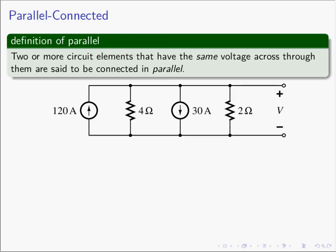The definition of parallel is that two or more circuit elements are said to be in parallel if they have the same voltage across them. Not just the same amount of voltage, but the exact same voltage, the same energy. We can see quite readily in this circuit that if we define a voltage V across the 120 amp source, then by writing KVL, we'd see that same voltage V appears across each element, including the 2 ohm resistor.